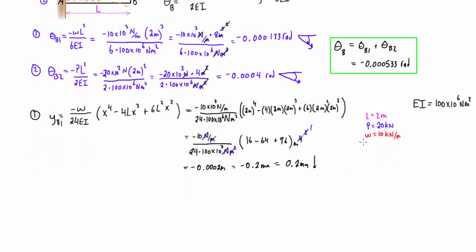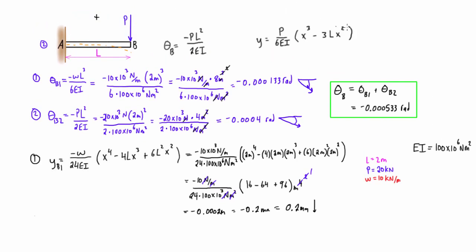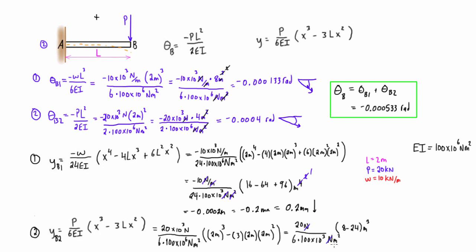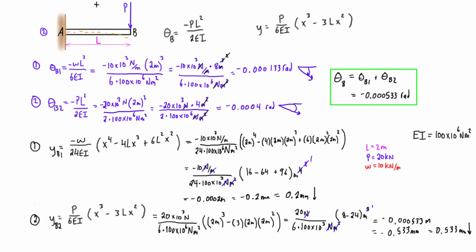For system two, we grab its elastic curve equation. Checking units: newtons cancel newtons, meters squared reduces to a single unit of meters. The calculation gives negative 0.000533 meters, which equals negative 0.533 millimeters, or 0.533 millimeters in the downward direction.